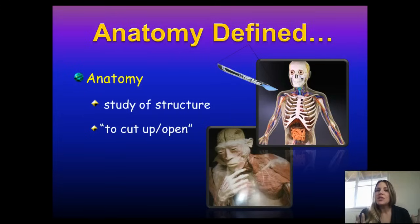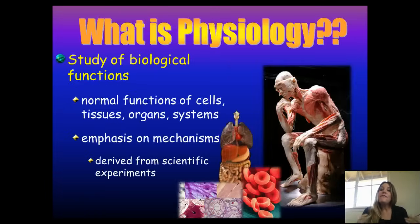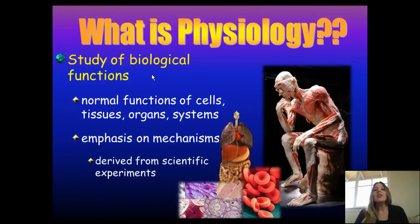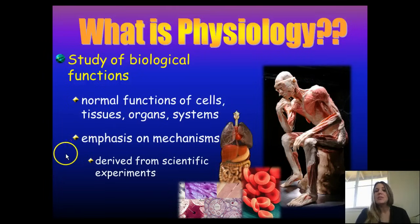Anatomy is the study of the structures of organisms — the names of the bones, the muscles, the blood vessels, and how these things relate to one another. Physiology is the study of biological functions: how those structures function, often at a cellular or subcellular level. The normal functions of cells, tissues, organs, and systems, with an emphasis on the mechanisms.